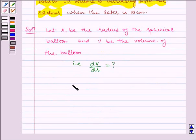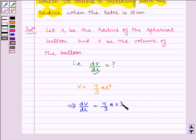We know volume of a sphere is given by V is equal to 4 by 3 pi r cube where R is the radius of the sphere. Now differentiating it with respect to R because we have to find dV by dr. We get dV by dr is equal to 4 by 3 pi multiplied by 3 r square.